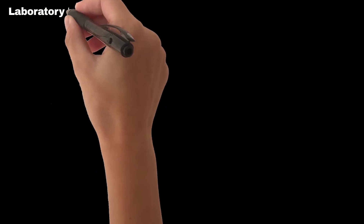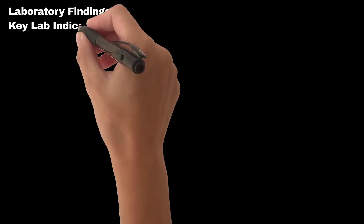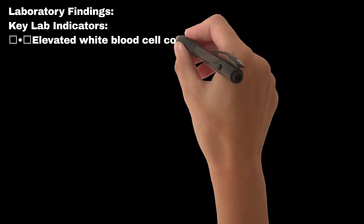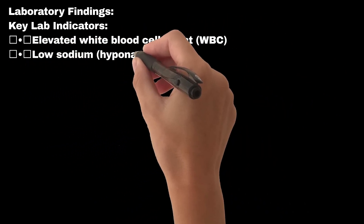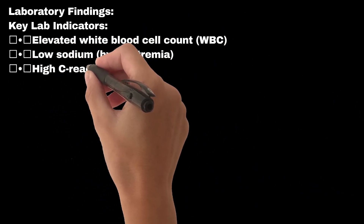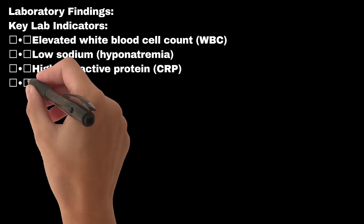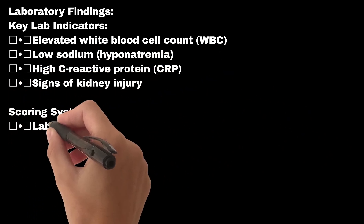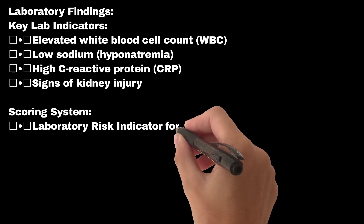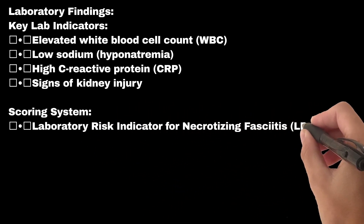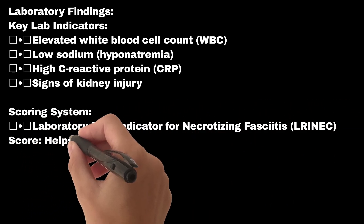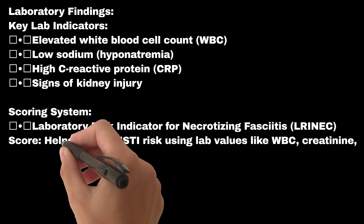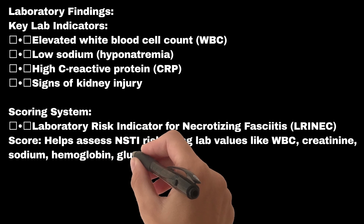Laboratory findings — key lab indicators include elevated White Blood Cell Count (WBC), low sodium (hyponatremia), high C-Reactive Protein (CRP), and signs of kidney injury. The LRINEC scoring system — Laboratory Risk Indicator for Necrotizing Fasciitis — helps assess NSTI risk using lab values like WBC, creatinine, sodium, hemoglobin, glucose, and CRP.